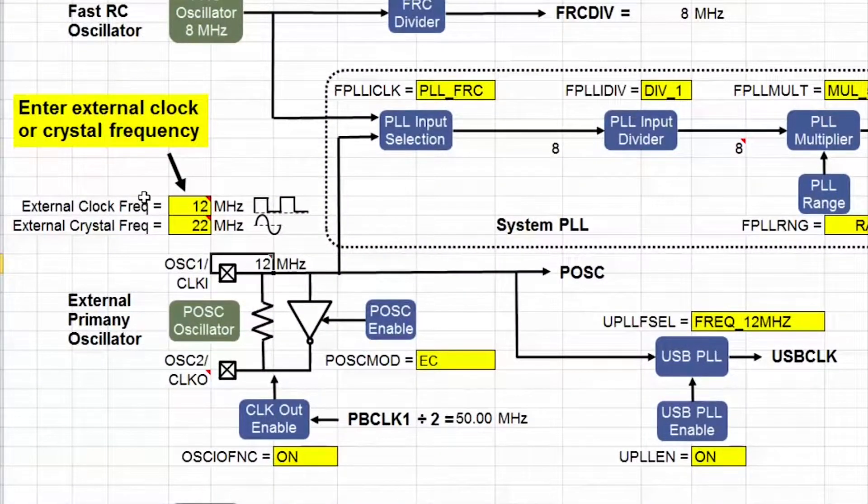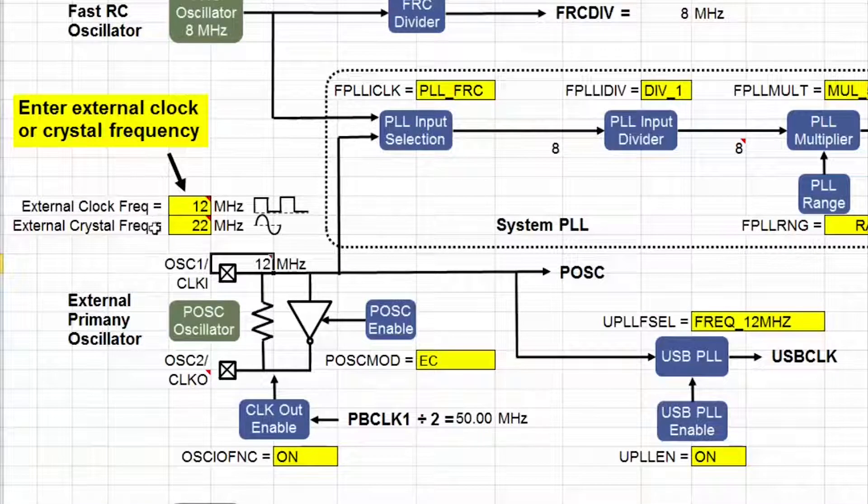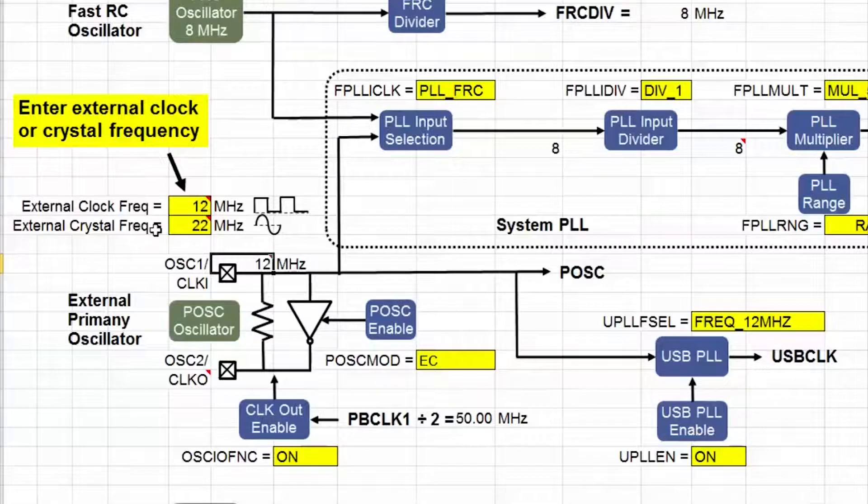The primary oscillator mode setting configures the oscillator to accept an external clock or high speed crystal input. Note the value I entered for the external clock here is shown on the input here, because of the primary oscillator mode setting here.